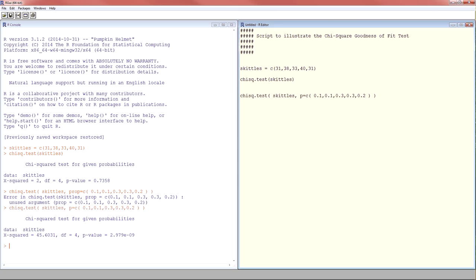And so if that is our hypothesized distribution, that there's 10% of all Skittles is purple, 10% yellow, 30% green, 30% orange, 20% red, then this would be how we would test that hypothesis. Notice that we give the hypothesized distribution inside the P equals part, and then we get a small P value, which means, no, we've got a lot of evidence that this is not the correct distribution.